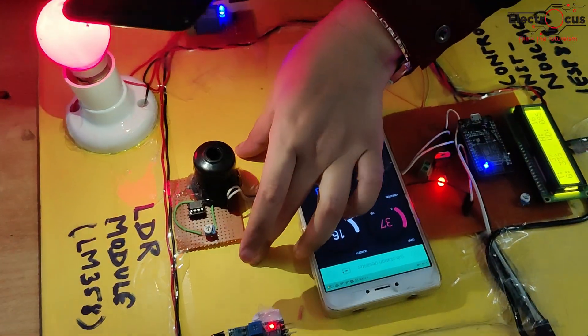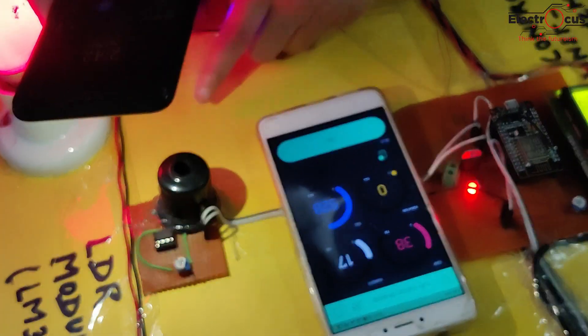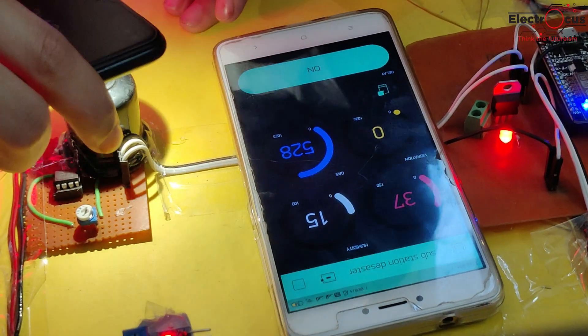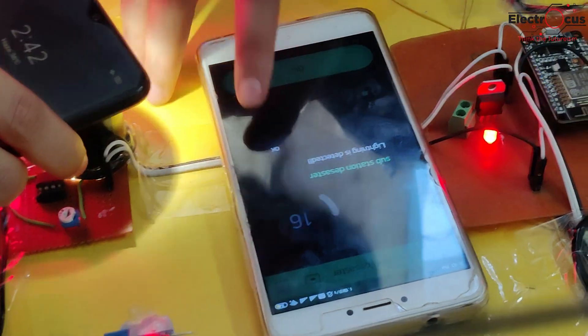This is LDR, which is basically used for light detection and thundering. Lightning is detected here.